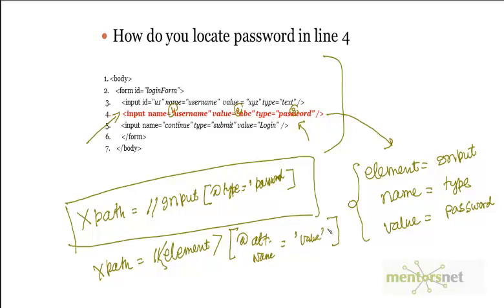If you do not want to match a specific element name, you can use a wildcard star instead of the element name — double slash star[@attribute-name='value']. This acts like a regular expression. If tomorrow there is a div instead of input, this wildcard XPath will match that div as well, making your locator more flexible.